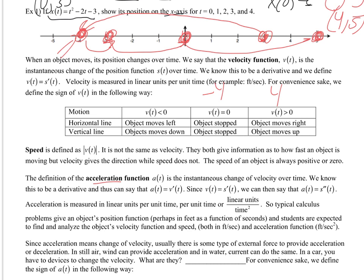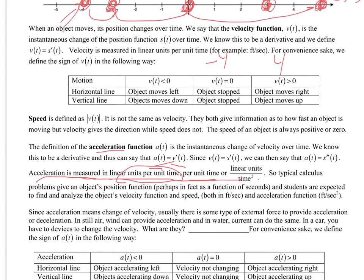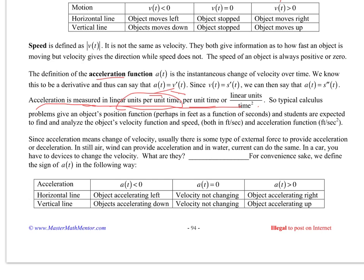The acceleration function is the second derivative of position — remember, the second derivative is just the derivative of the first derivative. Acceleration is typically in units of distance per time squared, which makes sense: velocity is linear units per unit time, and every second that is also changing.